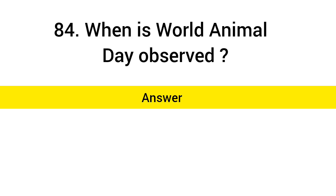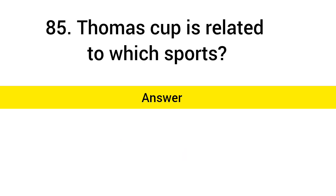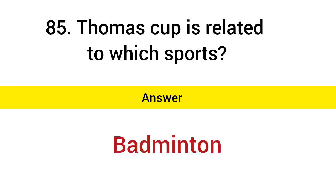When is World Animal Day observed? Answer: October 4. Thomas Cup is related to which sport? Answer: Badminton.